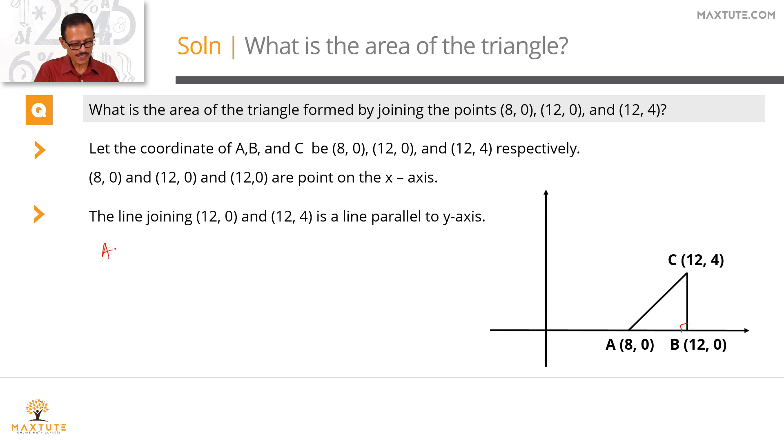Area of this right triangle is equal to half times the base AB times the altitude BC. What is AB? The y coordinate does not change because it's on the x-axis, so we just need to measure the displacement in the x direction, which is 12 minus 8, equal to 4.